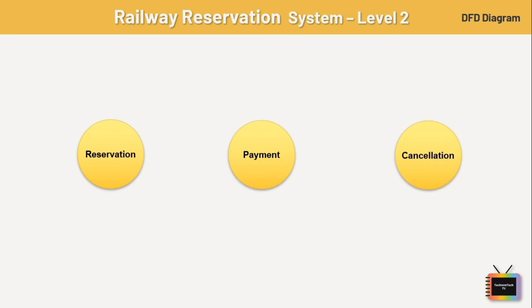Here we have three processes: reservation, cancellation, and payment. The reservation process involves checking train availability, selecting seats, entering passenger details, and making payments, updating the database accordingly. The cancellation process handles cancellation of reservations and refunds if applicable, updating the database accordingly. The payment process processes payments for reservations and cancellations. We have two entities: passenger, who initiates reservation and cancellation, and payment entity, which facilitates secure online transactions for ticket payments.